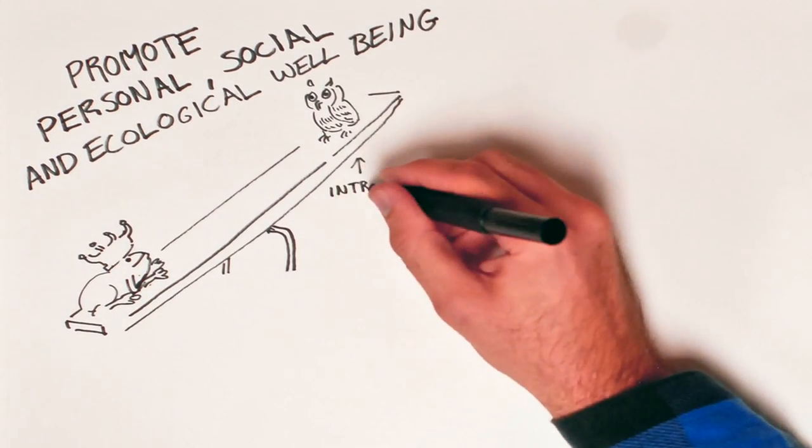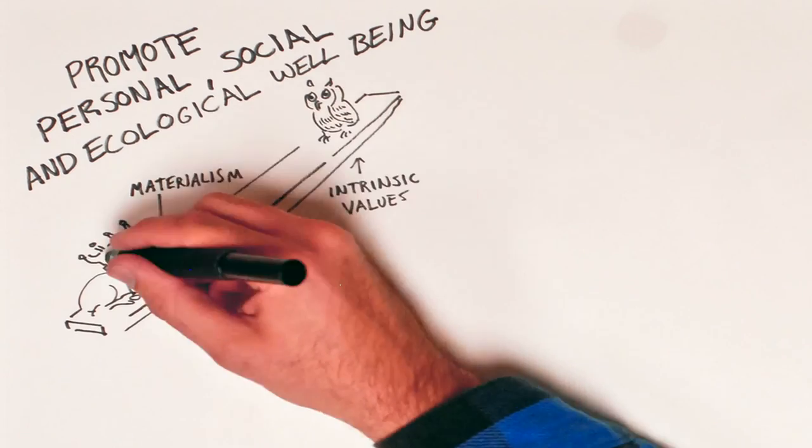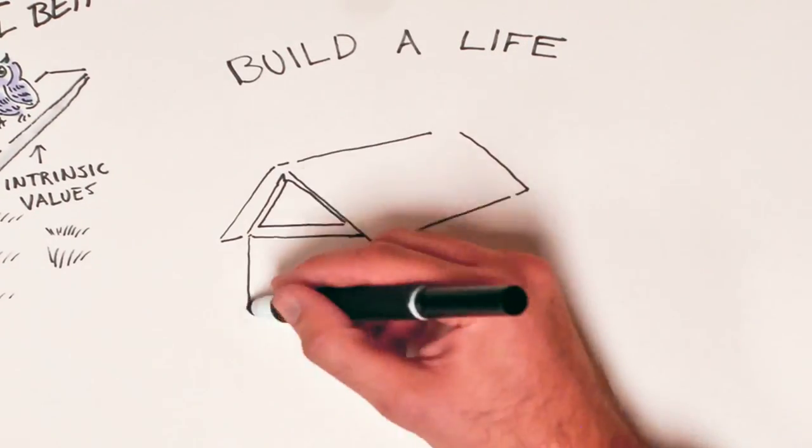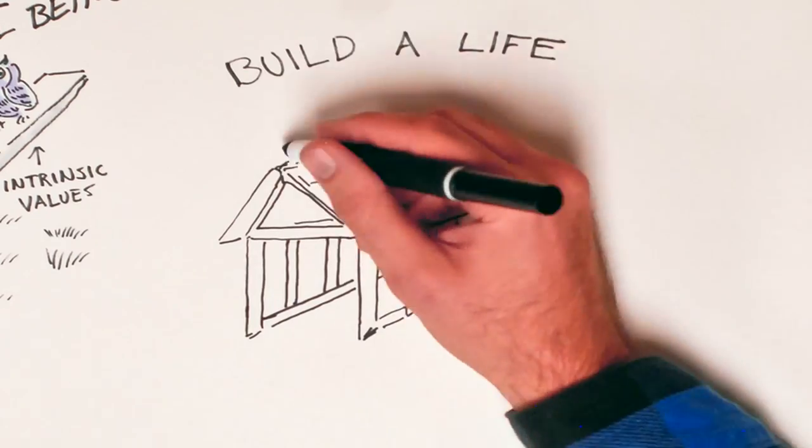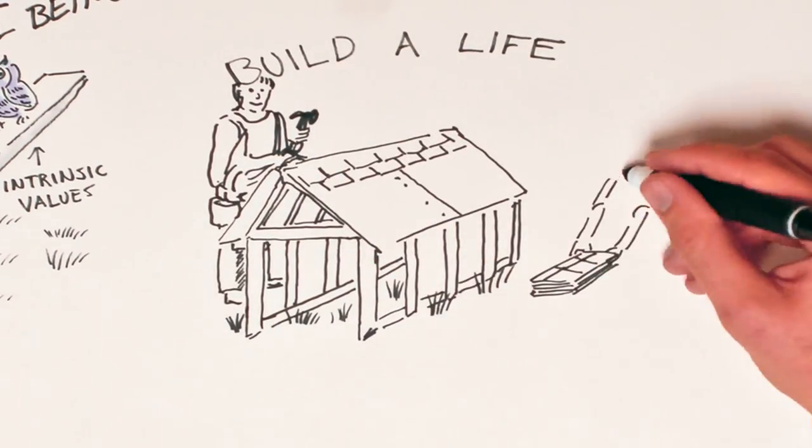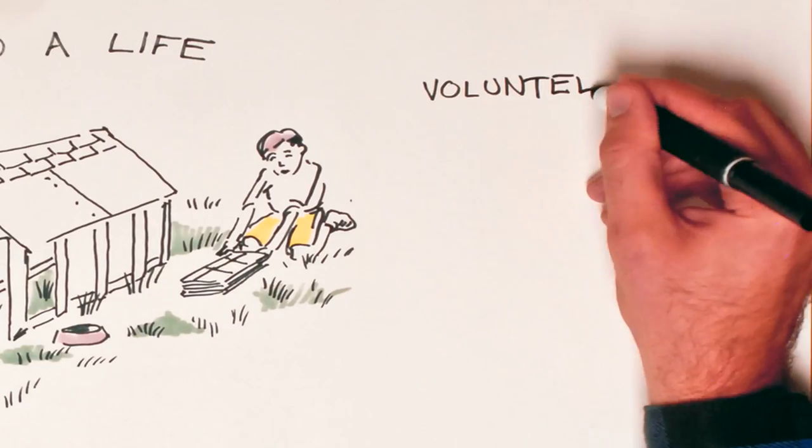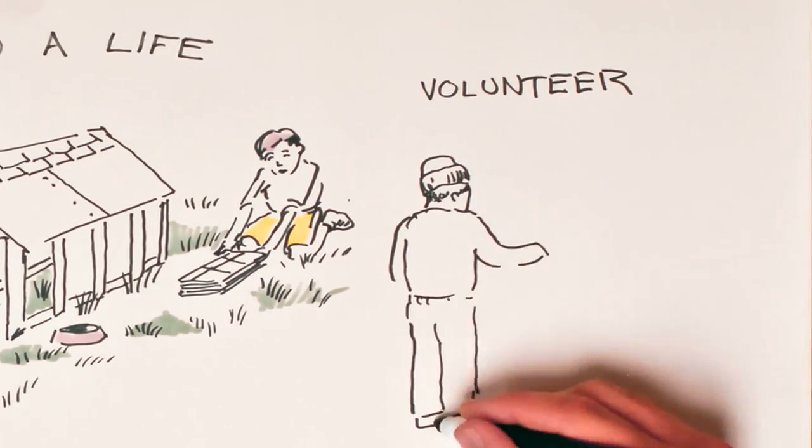It's that seesaw again. As intrinsic values go up, materialistic values tend to go down. So part of the trick is to build a life that expresses your intrinsic values. That might involve spending more time with people you care about, finding meaningful work even if it pays less, and taking part in volunteer opportunities for causes you care about.